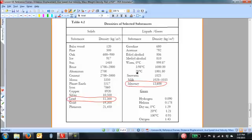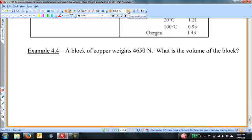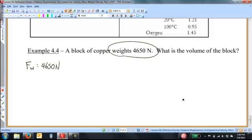Let's work the next example. Example 4.4. A block of copper weighs 4650 newtons. What is the volume of the block? We're given here the weight of copper. That weight is 4650 newtons. But we're looking for volume. If I knew what the mass of this copper was, then I could relate that mass through the density and the volume in the density formula. So I'm going to have to combine two equations together.